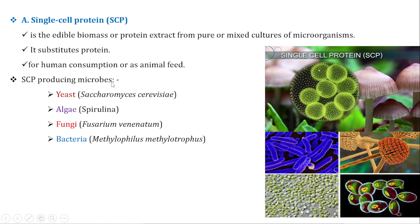Examples of single-cell protein sources include yeast such as Saccharomyces, common bacteria, spirulina, fungi, and bacteria such as Methylophilus. There are common differences between microorganisms used as scientific sources for single-cell protein, with each having a couple of associated molecules.